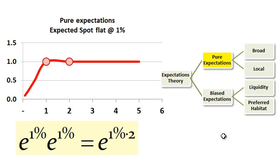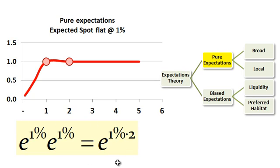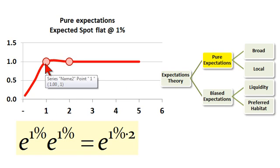Now, if we consider the basic expectation theories, they are oftentimes presented as mutually exclusive, but they're really more cumulative, and they go from unrealistic to realistic. Starting with pure expectations, which is neither realistic nor empirically supported, what we have here is a stylized term structure, flat at 1%. I'm using continuously compounding to keep the example simple.